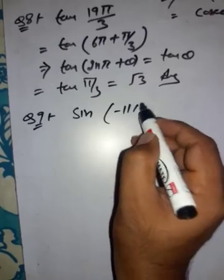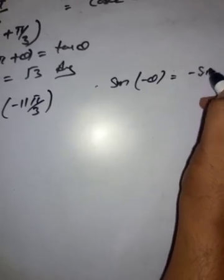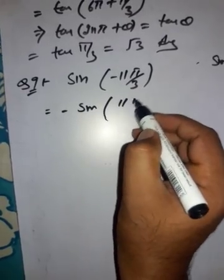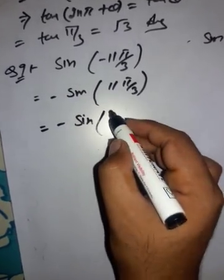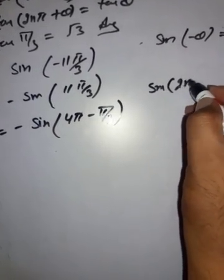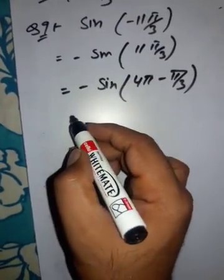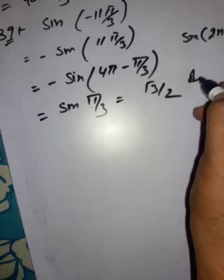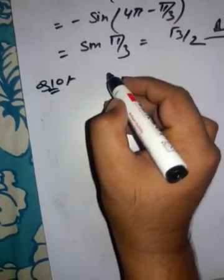Question 9: sin(-11π/3). Using sin(-θ) = -sin θ, we write -sin(11π/3). Now 11π/3 = 4π - π/3, which is of the form 2nπ - θ. Using sin(2nπ - θ) = -sin θ, the two negative signs give +sin(π/3) = sin 60° = √3/2. That is our answer.